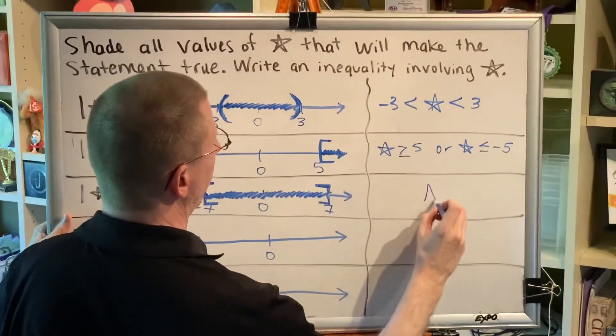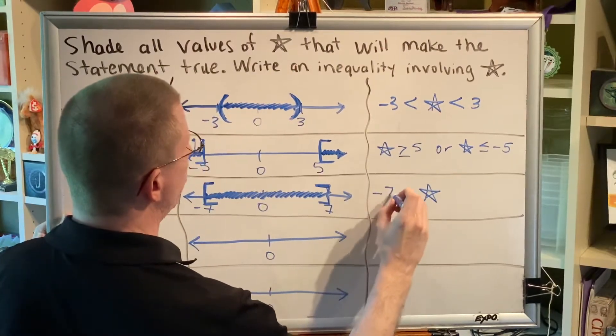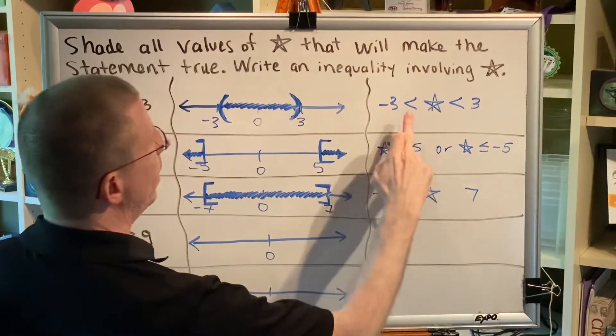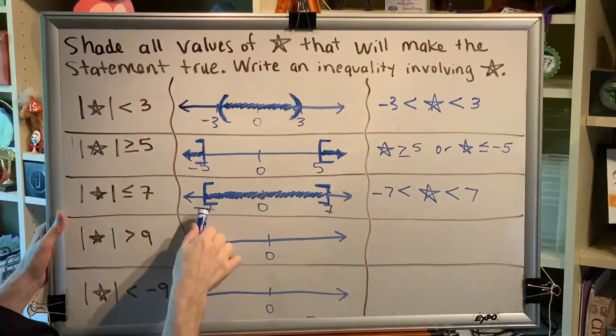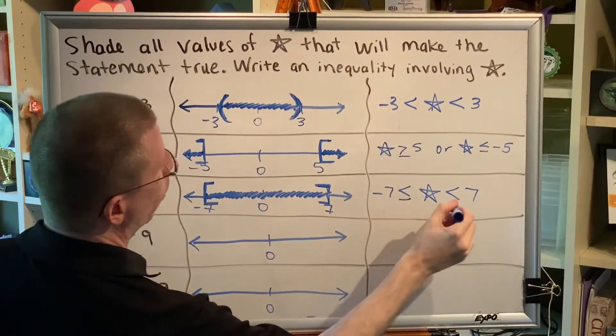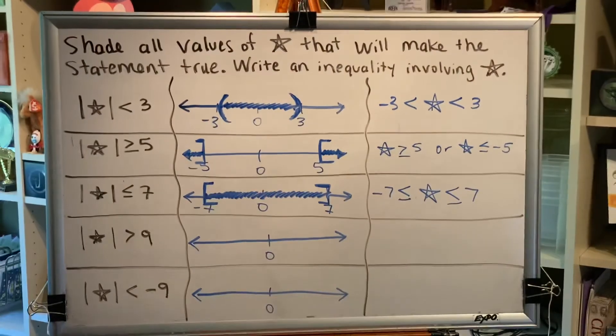What would the inequality look like? Star has to be in between negative 7 and 7. And this is the kind of symbol that has to go in both places. But because it's brackets this time, both of those are going to be written as less than or equal.